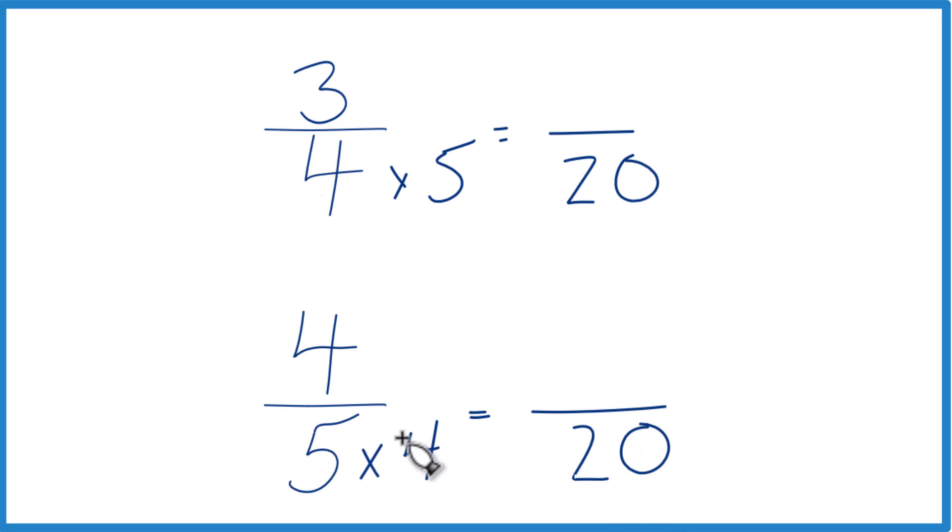But we can't just multiply the denominator by 4. We also need to multiply the numerator by 4 here. 4 over 4, that's just 1. We multiply by 1, we don't change the value, just the way it's represented. 4 times 4 is 16, and 16 twentieths, that's an equivalent fraction for 4 fifths, so they have the same value.